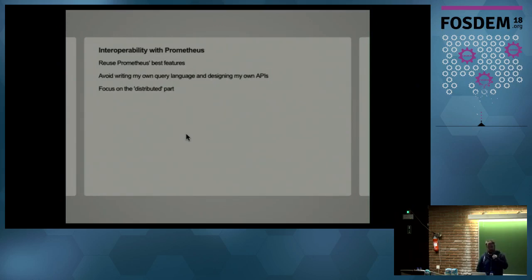And the other requirement I had was interoperability with Prometheus. So I mentioned the original use case I had in mind for this was to store Prometheus data long term. So I wanted to reuse Prometheus's best features, which is the query language and its data model. And also it has APIs already defined. So I didn't want to have to redesign those APIs when I could reuse those. So that helps me to focus the project. And it allowed me to focus really on the distributed part of the system, which was the part that was most interesting for this project.